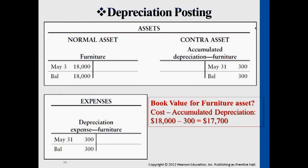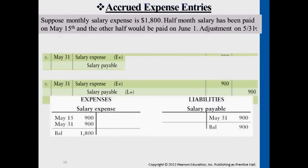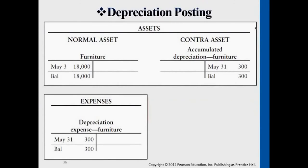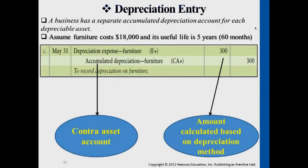The book value represents the current value of the asset — that is the original purchase price, the historical cost, minus the part that we recognize has already been deducted. So when we journalize this entry, it will be debiting depreciation expense and crediting the Contra Asset Account, accumulated depreciation. This Contra account has a normal balance at the opposite of a regular asset — it will be on the credit side.